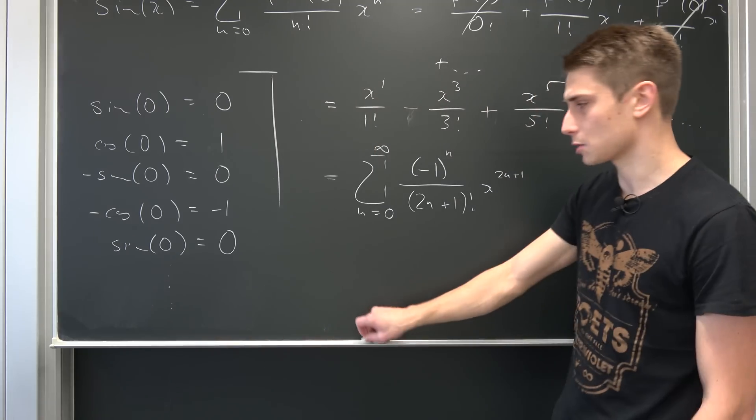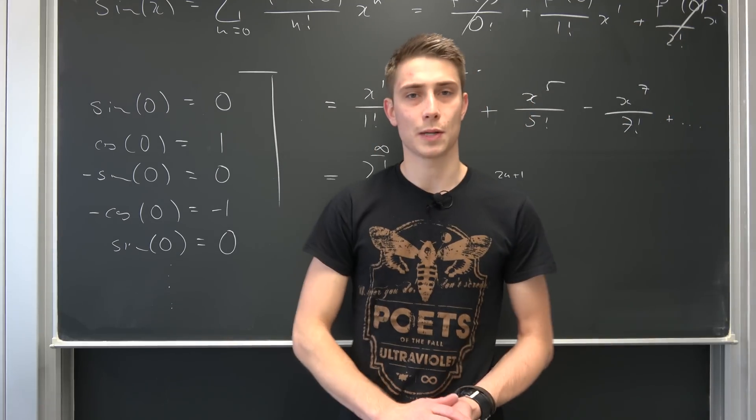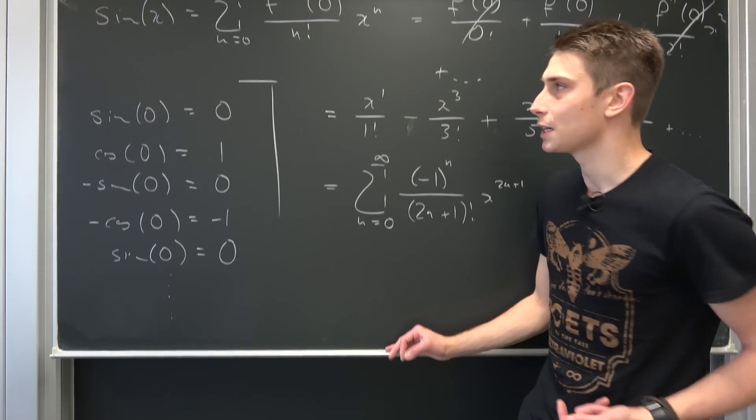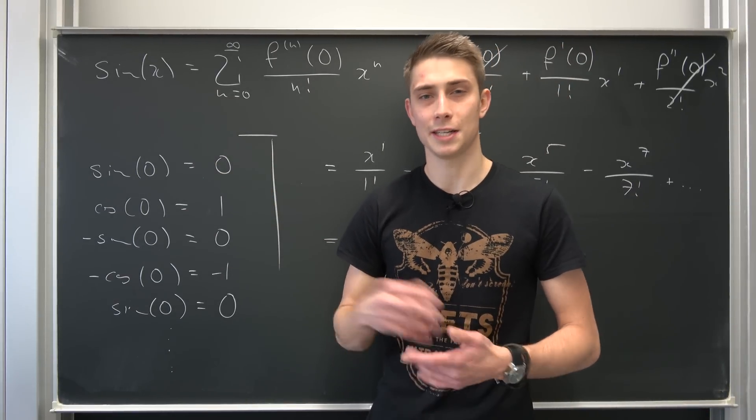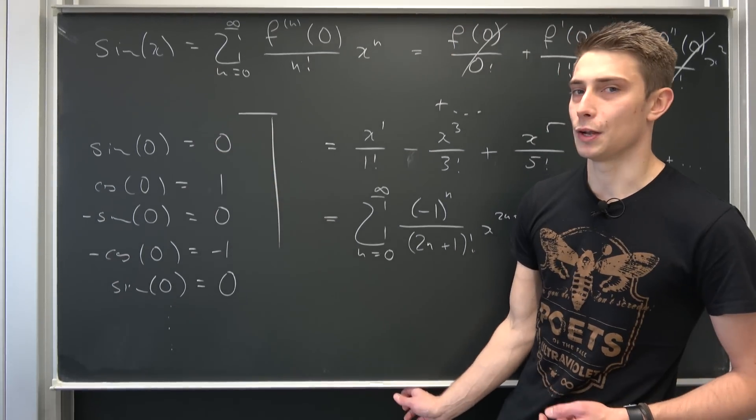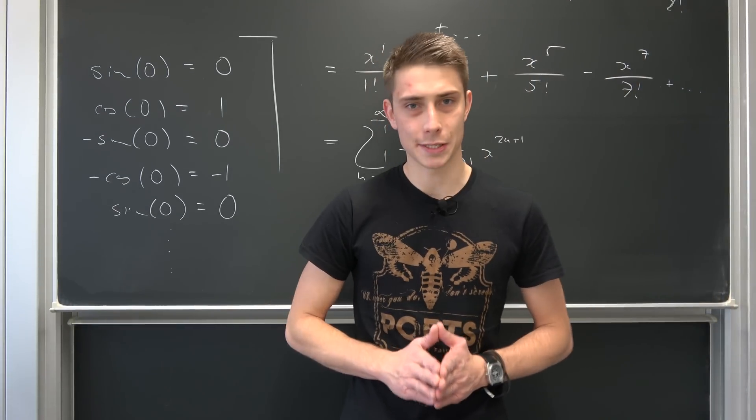This is the Taylor series expansion for our sine. So you see, the sine right here is kind of the odd part of something. And the cosine is the even part of a polynomial in infinite series.